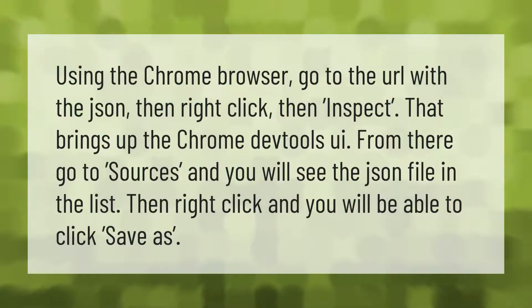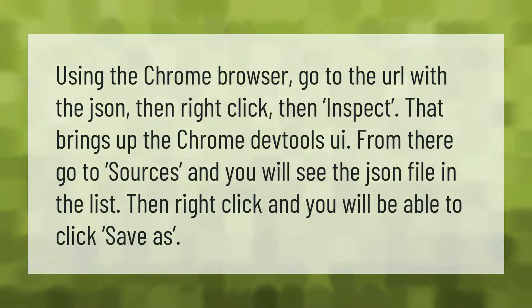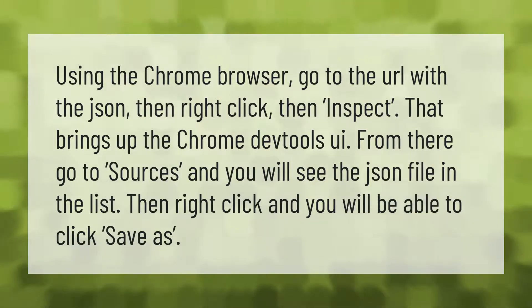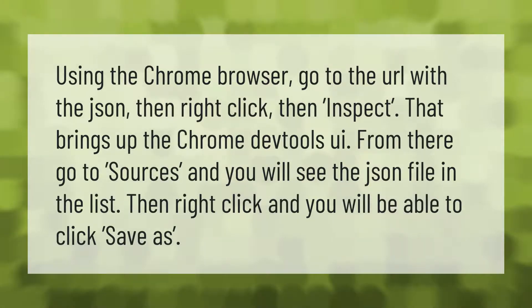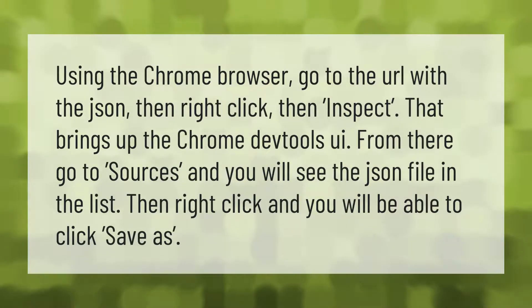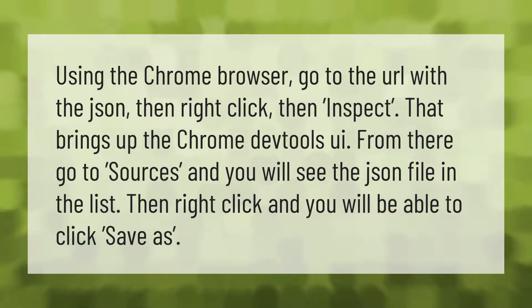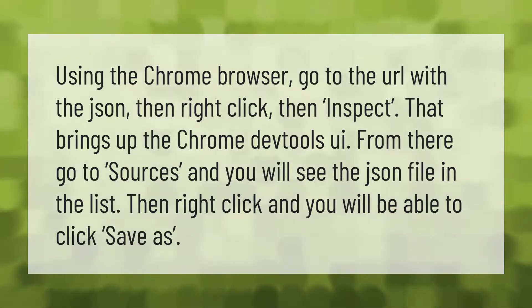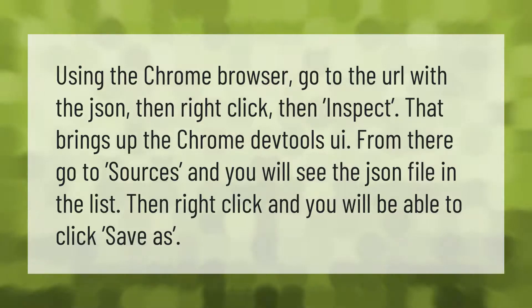Using the Chrome browser, go to the URL with the JSON, then right-click and select Inspect. That brings up the Chrome DevTools UI. From there, go to Sources and you will see the JSON file in the list. Then right-click and you will be able to click Save As.